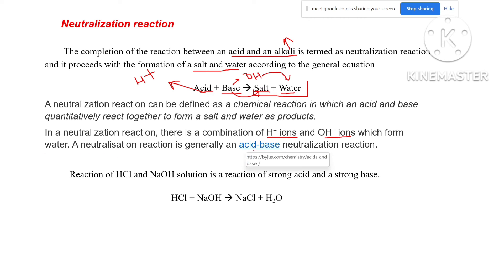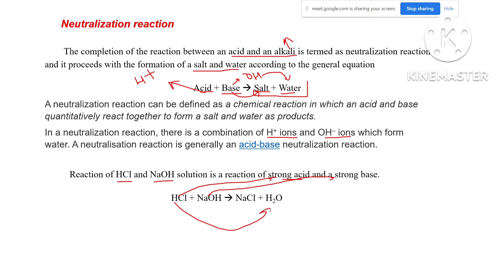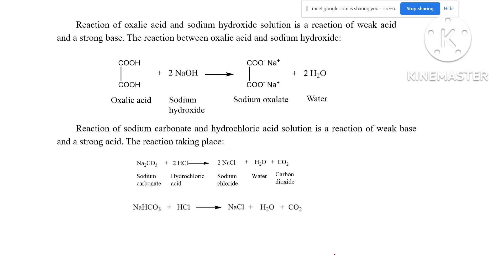When HCl reacts with NaOH — HCl being a strong acid and NaOH being a strong base — this is a reaction between a strong acid and a strong base. They give NaCl, sodium chloride, as the salt — also known as table salt — and water. So sodium chloride is the salt and we are left with the water.